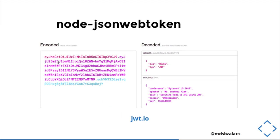There is a section called encoded — just paste whatever token you have and it will give you information such as header, payload, and other details. One thing to keep in mind is that JWT is a way of encoding, not encrypting. Please keep in mind that whatever data you put in the payload should not contain information which is not meant to be public.